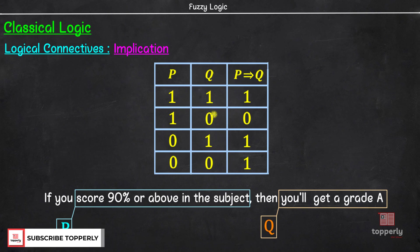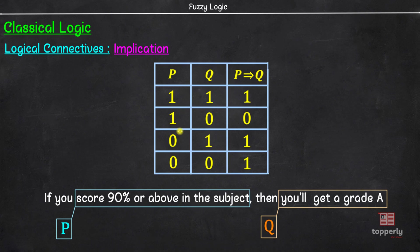However, in the next case, let us say your grade is not an A even though you scored 95%. That means the proposition P is true because you scored above 90%, but since your grade is not A, the proposition Q is false. Thus, the promise is broken and hence the overall statement is false. So, when P is true and Q is false, P implies Q is also false.